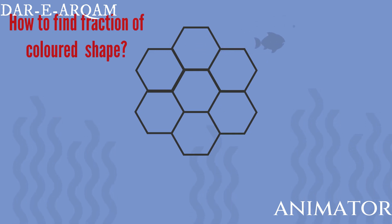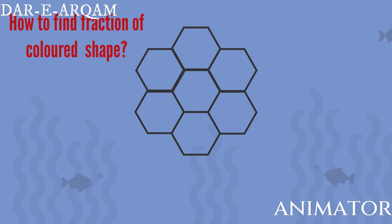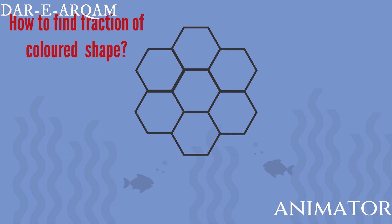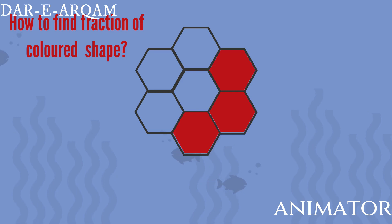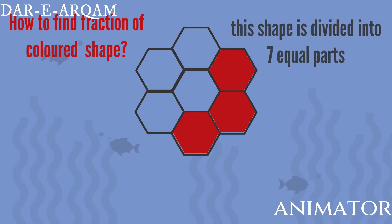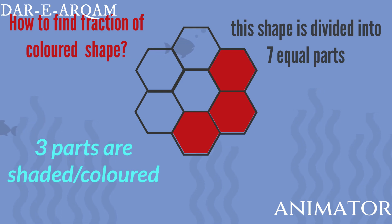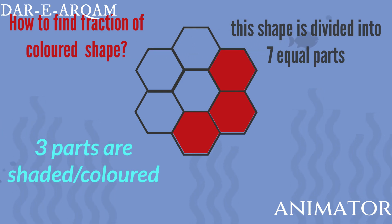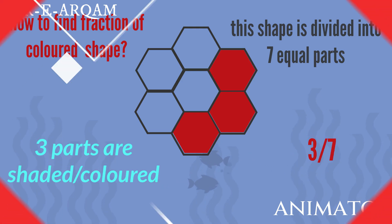Here we have a shape which contains 7 hexagons. If we color 1, 2, 3 hexagons among the 7 hexagons, then we have 3 colored hexagons and 7 total hexagons, both colored and uncolored. So the shaded fraction of this shape will be 3 by 7.